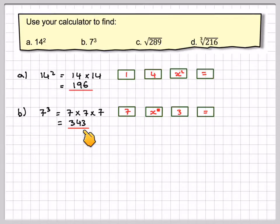Part C is the square root of 289, and we're going to do that on our calculator first.